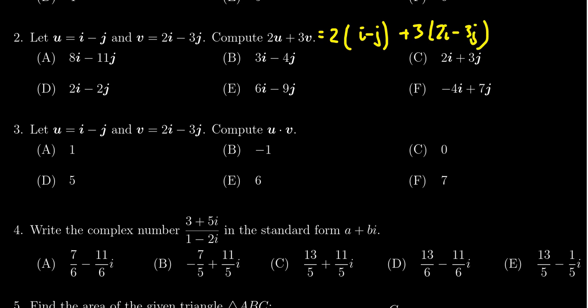And honestly, we can treat these vectors as if they were variables, just combine like terms, distribute there. We're going to get a 2i minus 2j plus a 6i minus 9j.